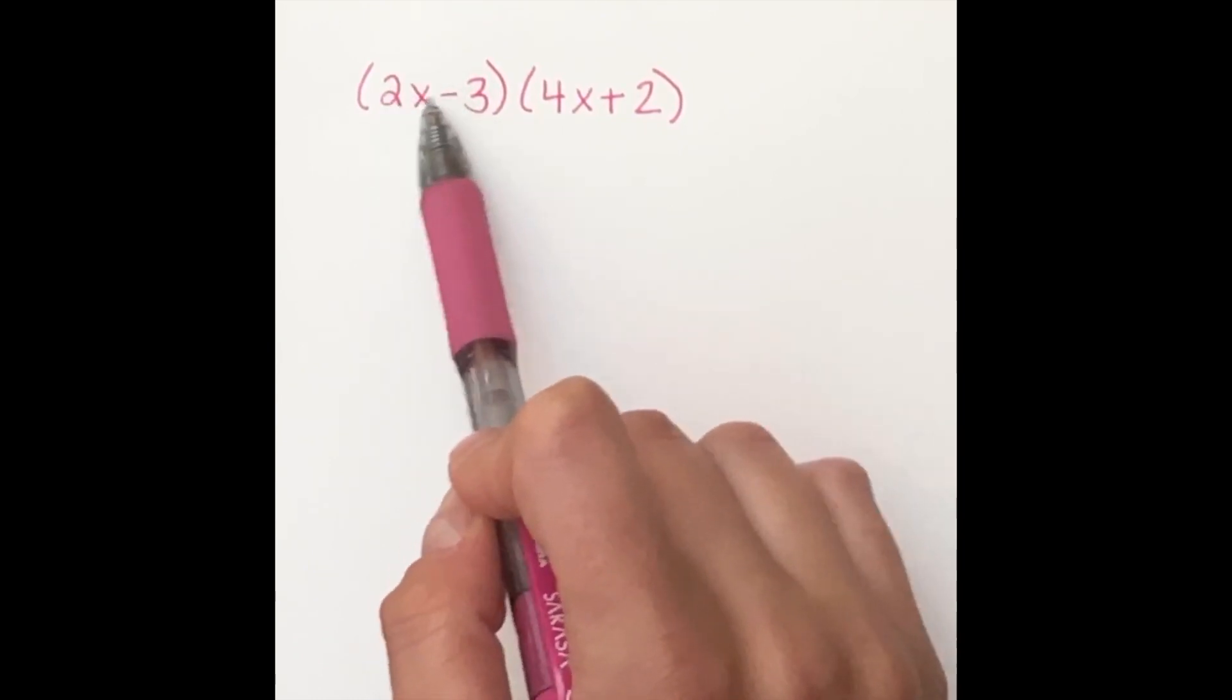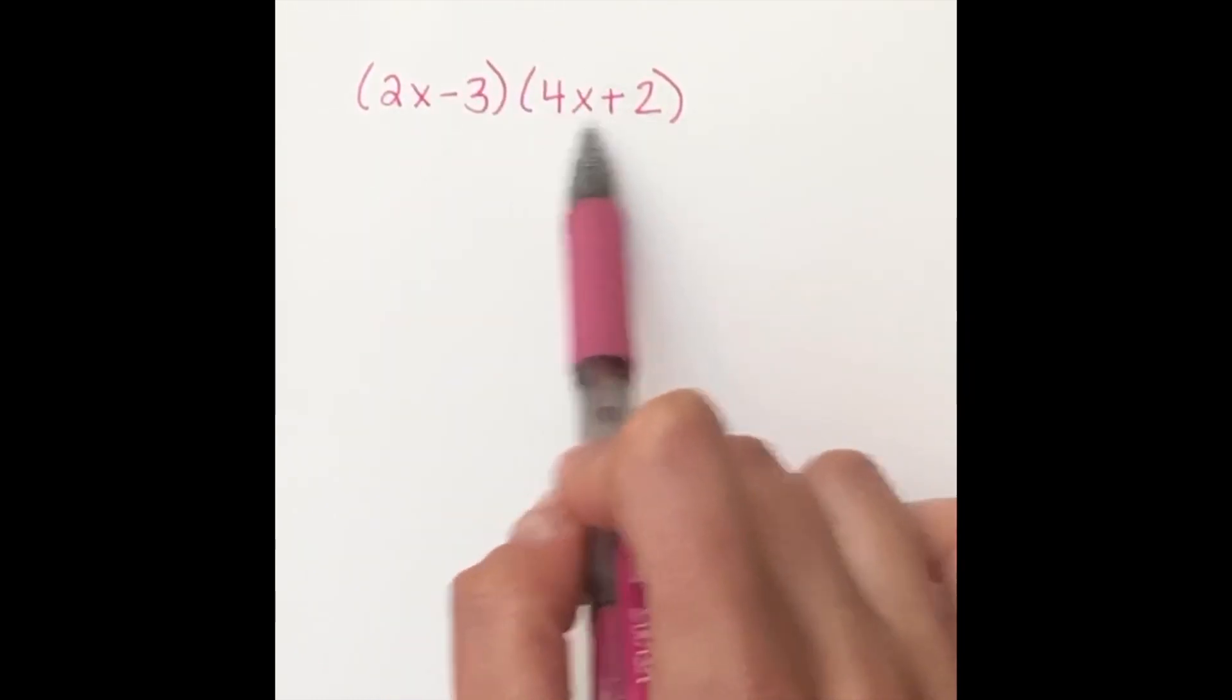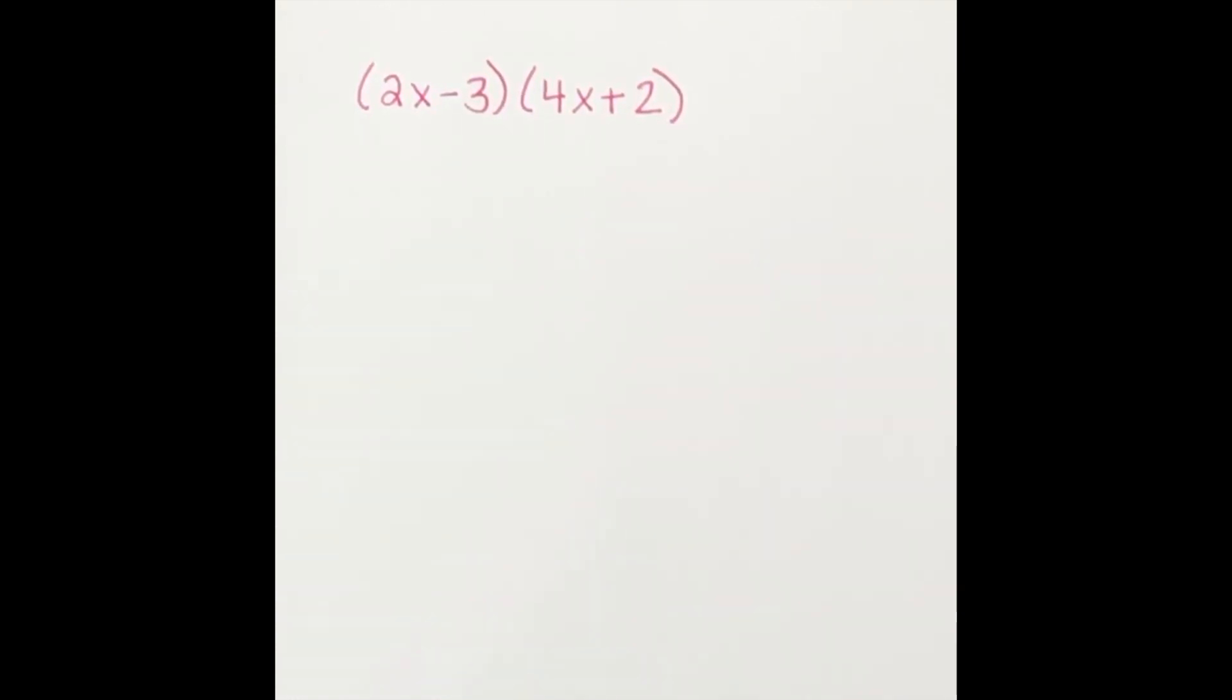We have to distribute the 2x through this and the negative three through this. So we have something called double distribution. Sounds fancy, but it really is something that you already know how to do.